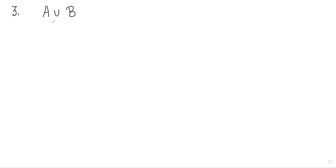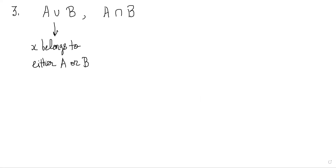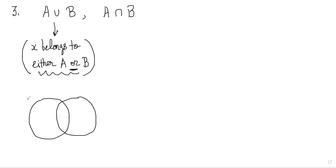Now, some standard things you might already be aware of: what is A intersection B, A union B? A union B is the set of all elements X such that X belongs to either A or B. You have to keep in mind the 'or' statement here — it is either in A or in B. The Venn diagram for it can be shown like this: if this is set A and this is set B, the whole of this region is A union B. Any element lying in all of these regions is part of A union B.